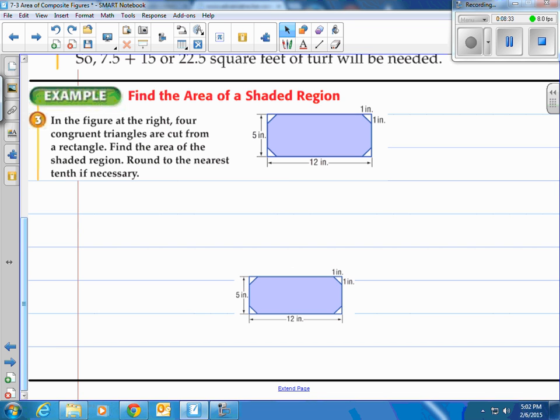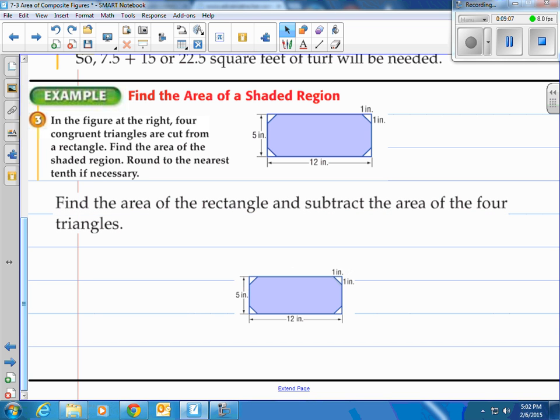It says find the area of the shaded region, and there's some pieces missing here. So in the figure at the right, four congruent triangles, that means all the little white triangles there are the same, are cut from a rectangle. Find the area of the shaded region, round to the nearest tenth if necessary. So it looks like they took a rectangle, and then they cut off the little triangle parts there. So really if we wanted to, we could find the area of the entire rectangle, and then just subtract off those four pieces, and that's actually what we're gonna do. So we're gonna find the area of the rectangle and subtract off the triangles.